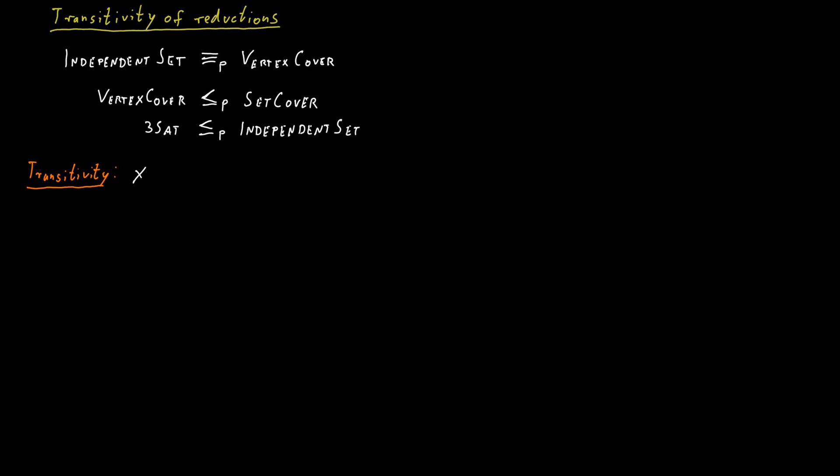So what this means is that if X polynomial time Karp reduces to Y and Y polynomial time Karp reduces to Z, then X also polynomial time Karp reduces to Z. So if we have the first reduction and the second reduction, then we do not need to explicitly do the third reduction. We already know that this is true.